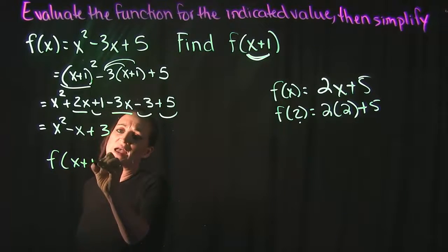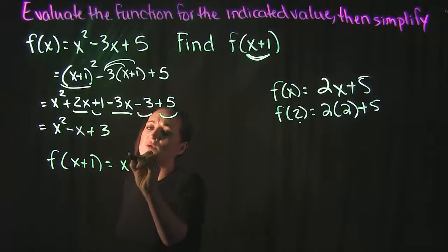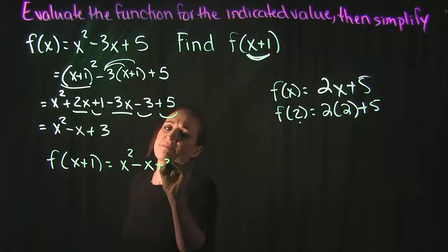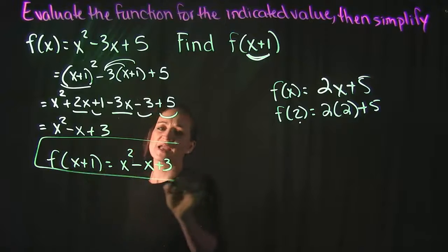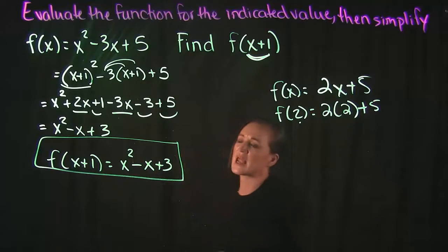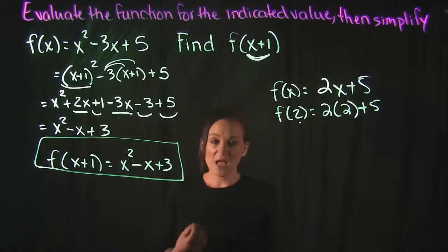That means that f of x plus 1 is equal to x squared minus x plus 3. We get that simply by plugging in x plus 1 in for x and simplifying. That's it for this video.